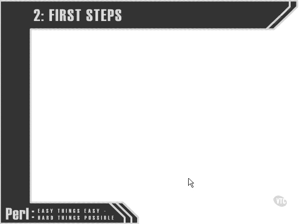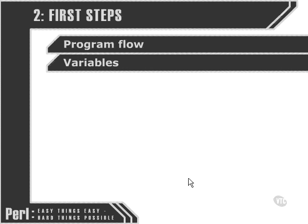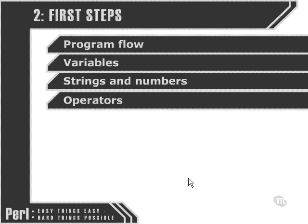In this chapter, we're going to look at some of the basic fundamentals of the way in which a Perl program works. We're going to be looking at variables, which are very basic concepts in any programming language, and Perl is no exception. We're also going to be looking at the difference between strings and numbers, and operators, which are symbols that are very important to carry out operations within Perl scripts.